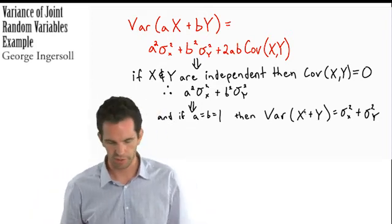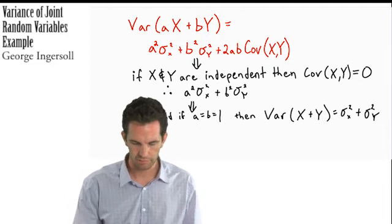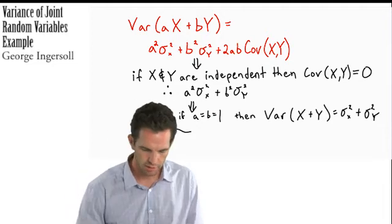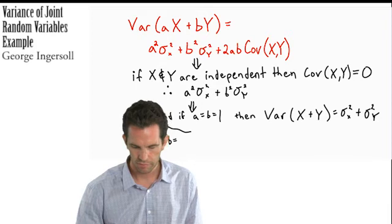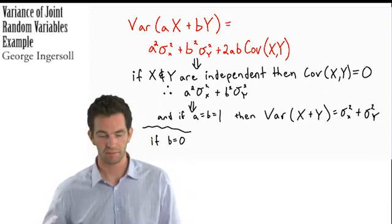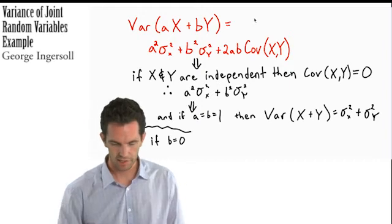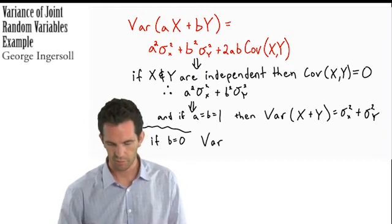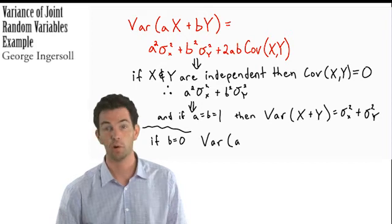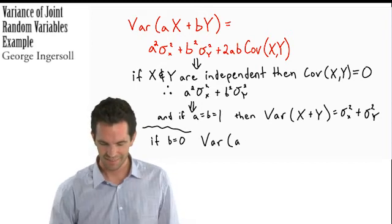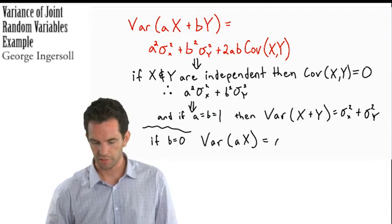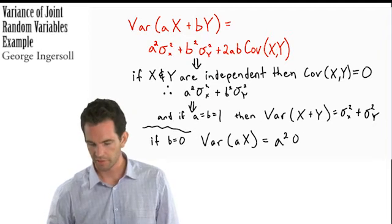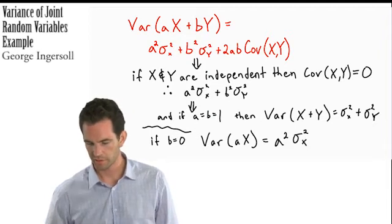One more thing worth noting: if b is equal to zero, meaning essentially all we're really saying is the variance of ax and no quantity of b, then the variance of ax is equal to a squared times the variance of x.